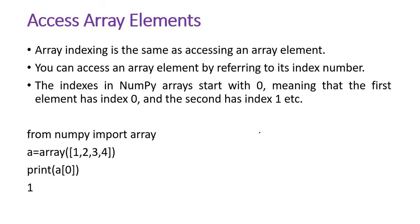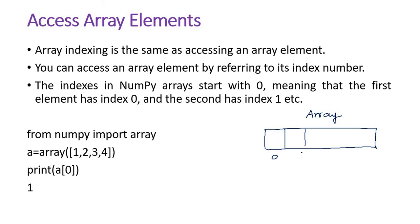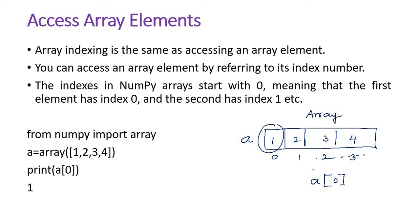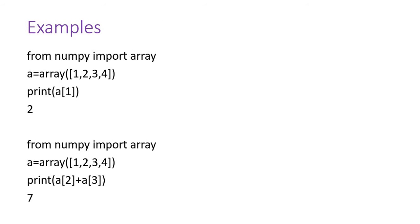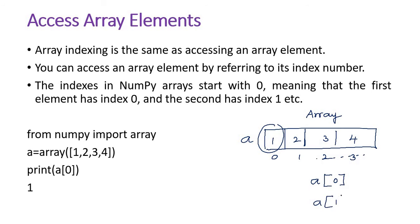So basically, like a list, the first index for an array is 0, next index is 1, and so on. For this example, array 'a' is created containing elements 1, 2, 3, and 4. If I want to access the first element, I use a[0] and that will give 1. If I want the second one, I give a[1], that will give 2.